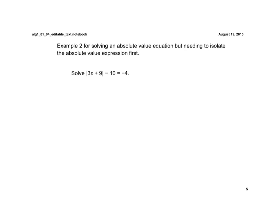So we're going to go ahead and do that. And to isolate this, we're going to get rid of the minus 10, so we're going to add 10 to both sides. And once I do that, I have the absolute value of 3x plus 9 now equals a positive 6. And now the only thing on the left side of the equal sign is the absolute value.